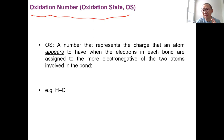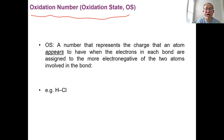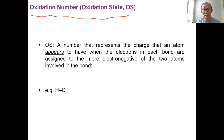The oxidation number is a number created and assigned by chemists to study the elements in chemical reactions. That number — oxidation state — is basically assigned in a way that we assume the charge that appears when the electrons in each bond are assigned to the more electronegative element. We assume all electrons are given to the more electronegative element, and whatever charge these elements would have is called the oxidation number. It's not a real number — it's a number we assign to help us determine and study redox reactions.